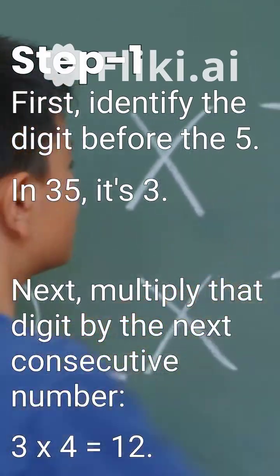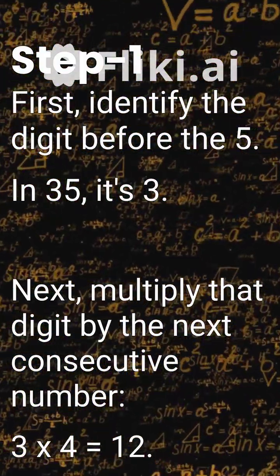Next, multiply that digit by the next consecutive number. 3 times 4 equals 12.